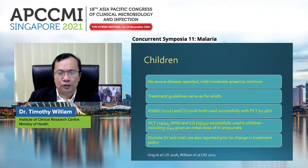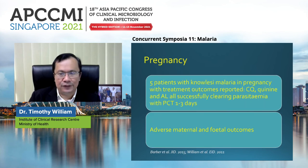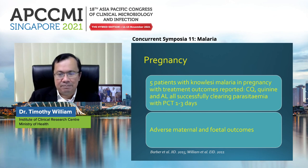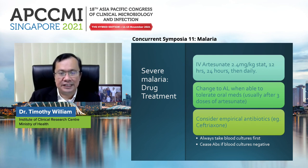For children, no severe disease has been reported and treatment guidelines are the same — ASMQ and chloroquine both used successfully, and ACT and chloroquine successfully used in children, including 2 out of 44 given an initial dose of IV artesunate. In pregnancy, there were adverse maternal and fetal outcomes. Five patients with P. knowlesi in pregnancy had treatment outcomes reported; chloroquine, quinine, and artemether-lumefantrine all successfully cleared parasitemia with a parasite clearance time of 1–3 days. IV artesunate dosing is 2.4 mg/kg, then 12 hours later and 24 hours later, changing to artemether-lumefantrine as soon as oral medications are tolerated. Consider empirical antibiotics.